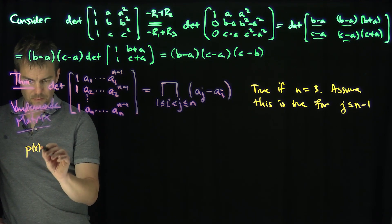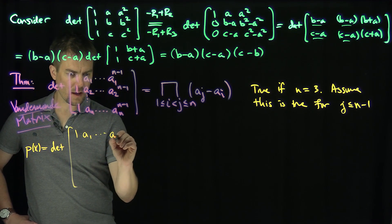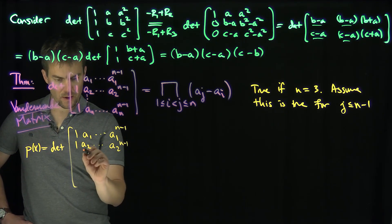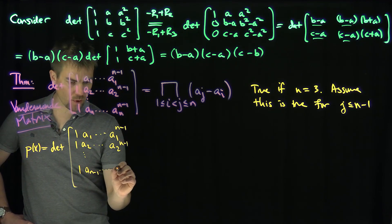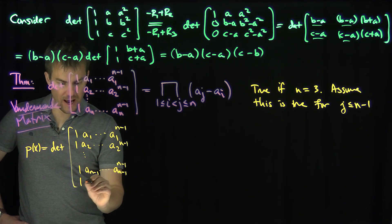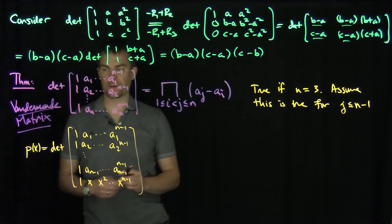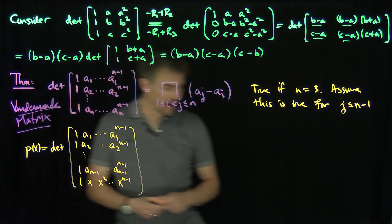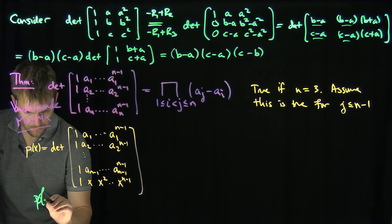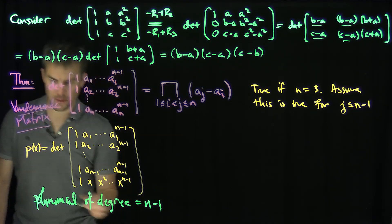Define p(x) to be the determinant of the matrix whose first n minus 1 rows are the standard Vandermonde rows: 1, a₁, ..., a₁^(n-1); 1, a₂, ..., a₂^(n-1); down to 1, a_(n-1), ..., a_(n-1)^(n-1); and whose last row is 1, x, x², ..., x^(n-1). So p(x) is a function of x, and it is a polynomial of degree n minus 1.